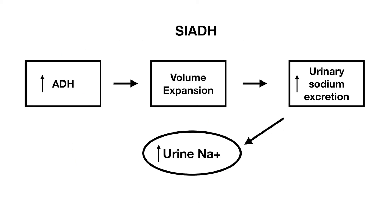So with SIADH we have an elevated ADH level which leads to volume expansion. As a result of this volume expansion, there is an increased urinary sodium excretion that occurs through inhibition of the RAS system. This helps return the extracellular fluid volume back to its normal level, but also lowers the plasma sodium concentration as a result, which is what we end up seeing.